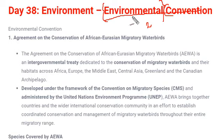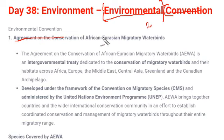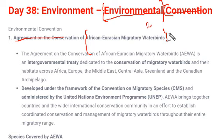There are several important conventions we are going to study, which are very important from your exam point of view. The first environmental convention is the Agreement on Conservation of African-Eurasian Migratory Waterbirds (AEWA). Names are generally given based on characteristics or features of the convention. This is an environmental convention for African-Eurasian migratory waterbirds — birds that move from one place to another and stay on or around a water body.